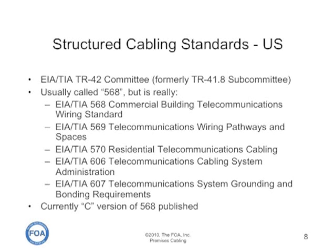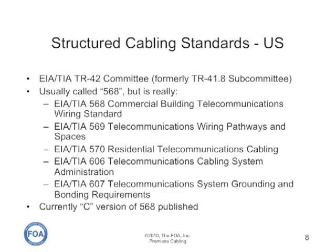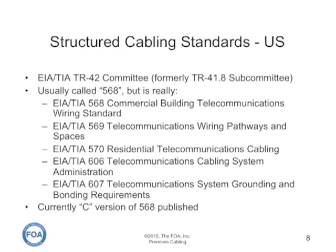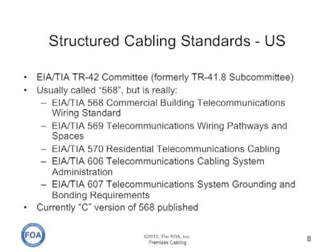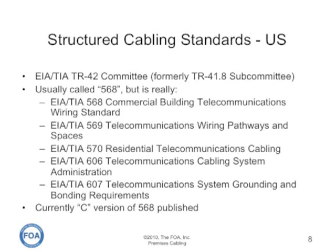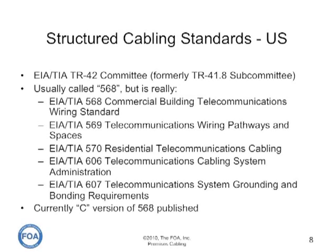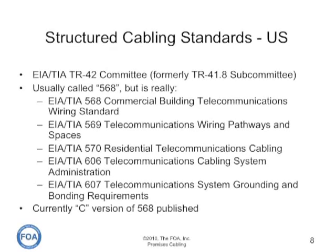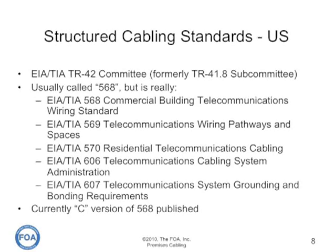In the U.S., structured cabling is based on work by the EIA-TIA TR42 committee. It's usually called the 568 standards, but it's really the 568 standard for building telecommunications, 569 for wiring pathways and spaces, 570 for residential telecommunications, 606 for administration, and 607 for grounding and bonding requirements. At the current time, 568 is in its C revision, but it's being revised continuously, so you really don't know exactly what each standard is in the latest version unless you're a manufacturer attending the standards committees.